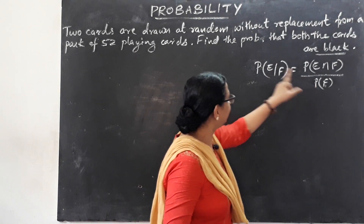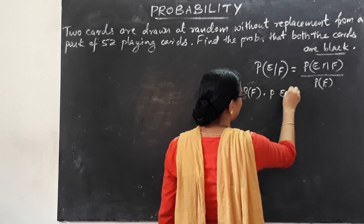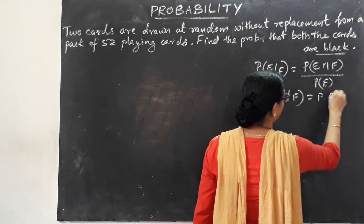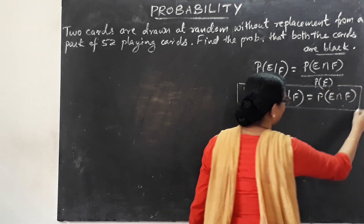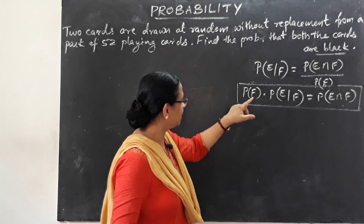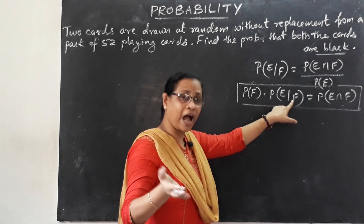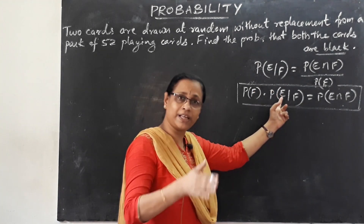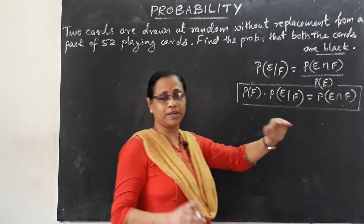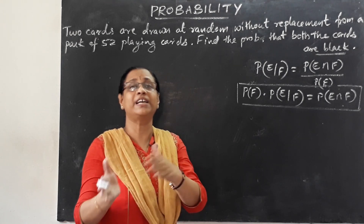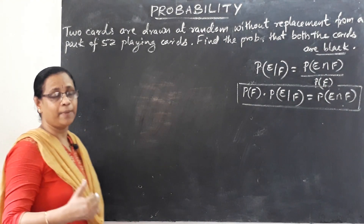This leads us to the multiplication theorem. The formula is: P(F) × P(E|F) = P(E ∩ F). This is the multiplication theorem of probability.